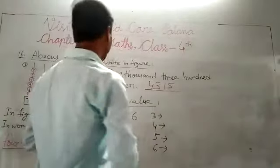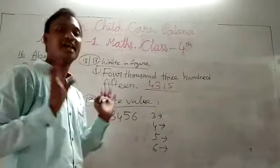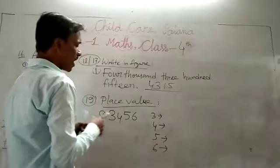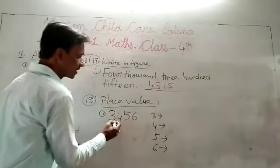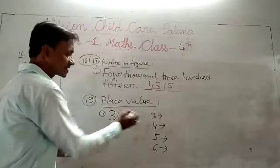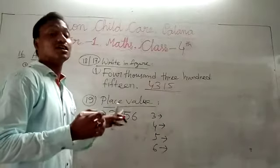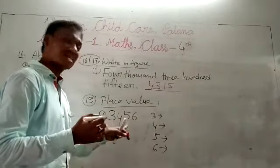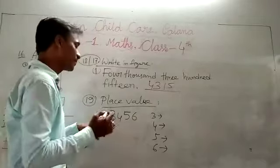After that, question 19 - make a place value. In one number there is 3,456. First, make place value. Every digit has place value.